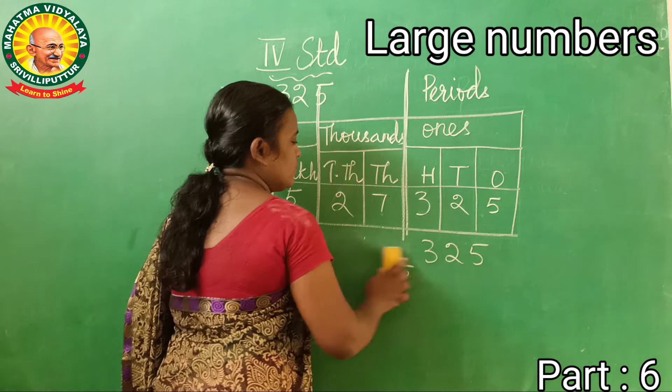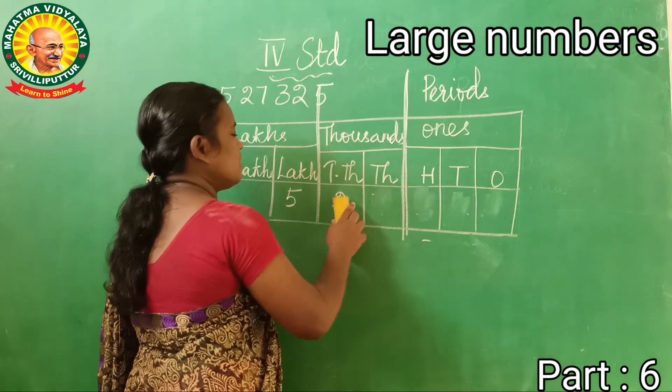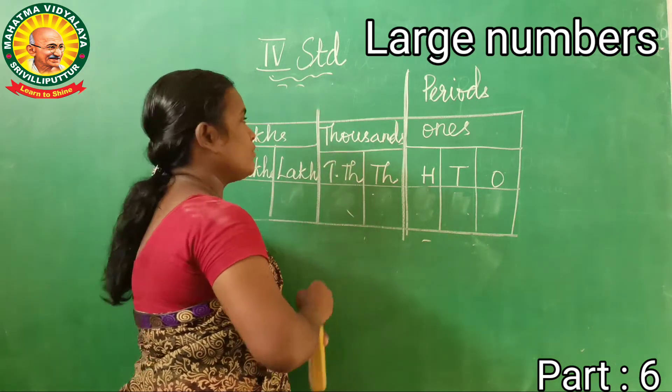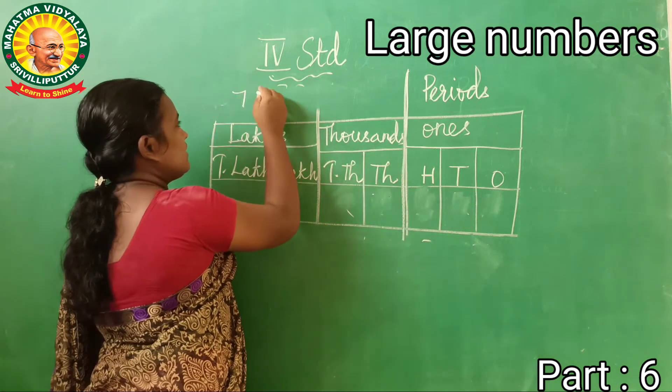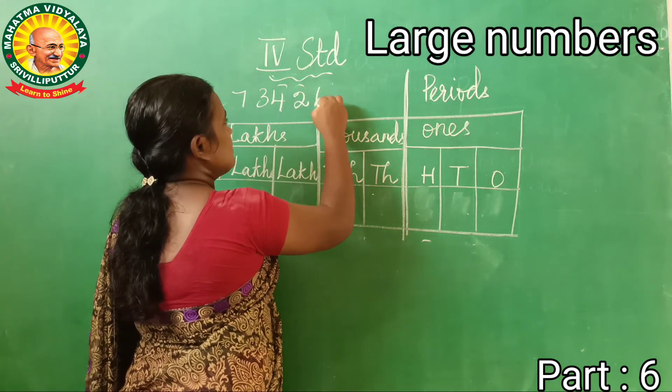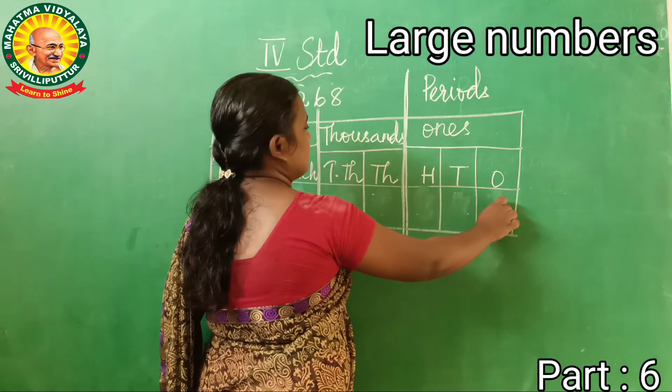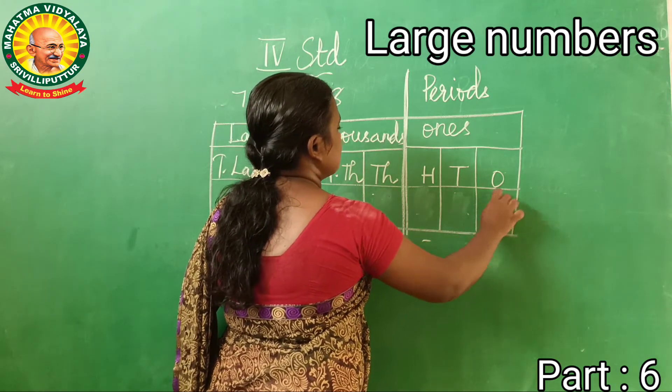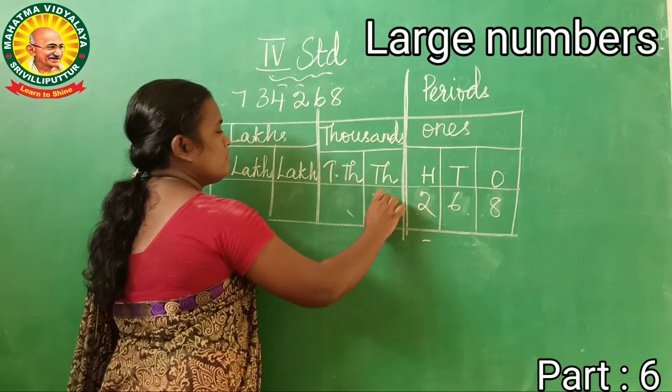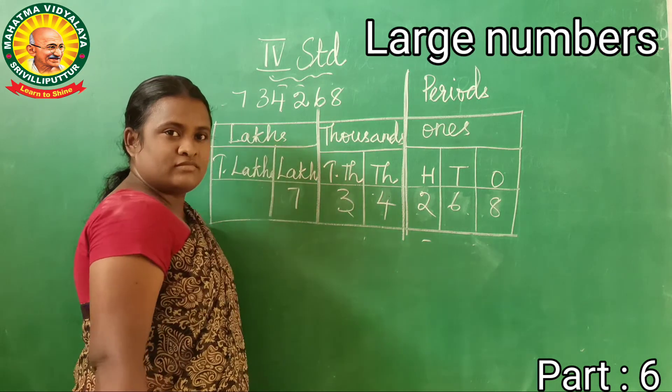Now this is a number and how to insert the commas. Look at the board. Seven lakhs, thirty-four thousand, two hundred and sixty-eight. I am starting to replace this: eight, six, two, come to place, four, three, seven.